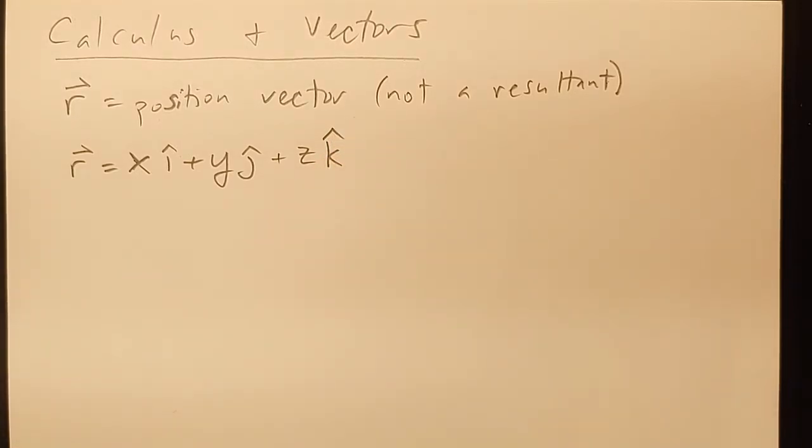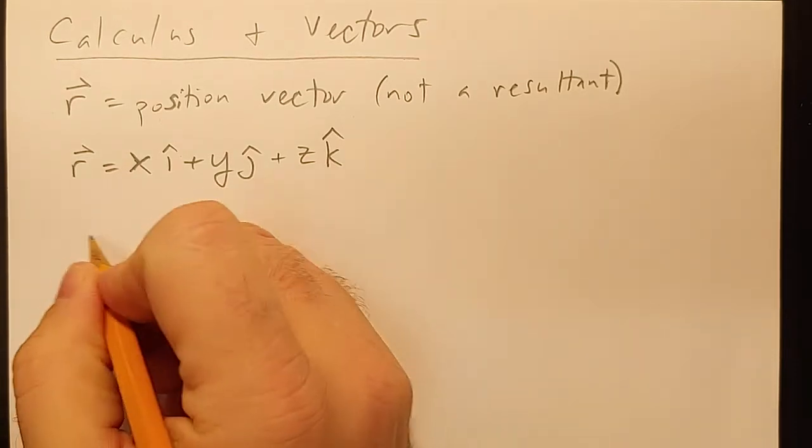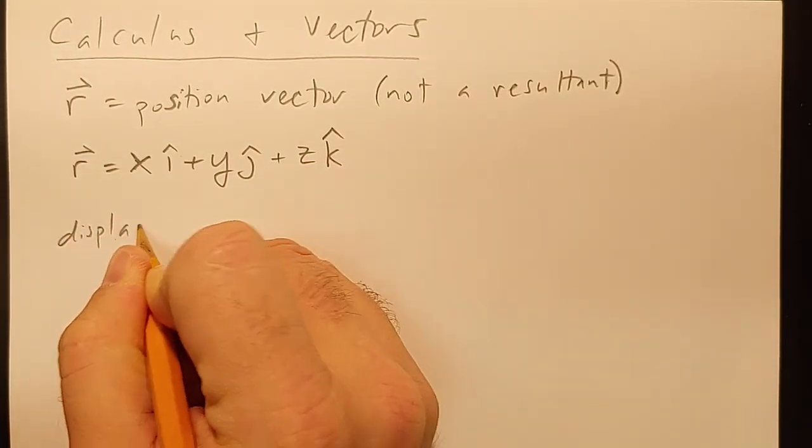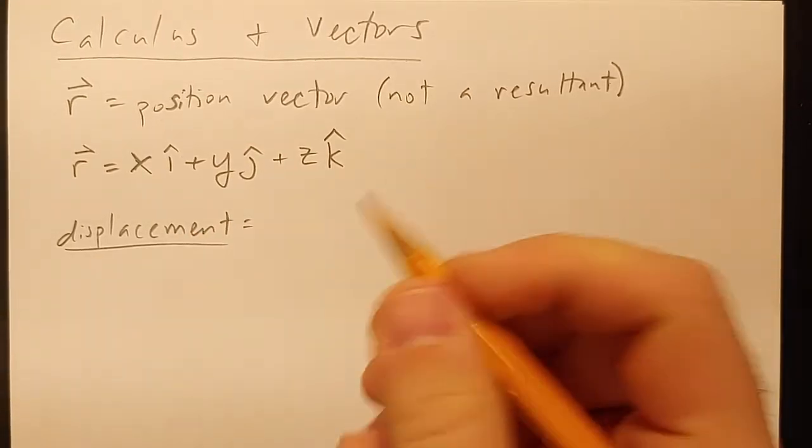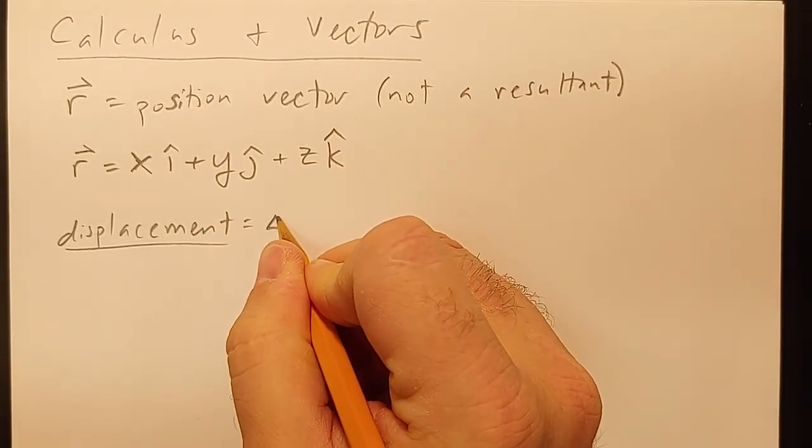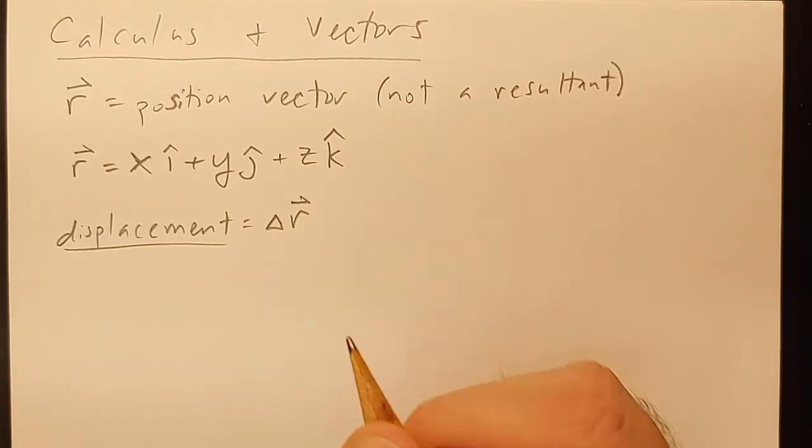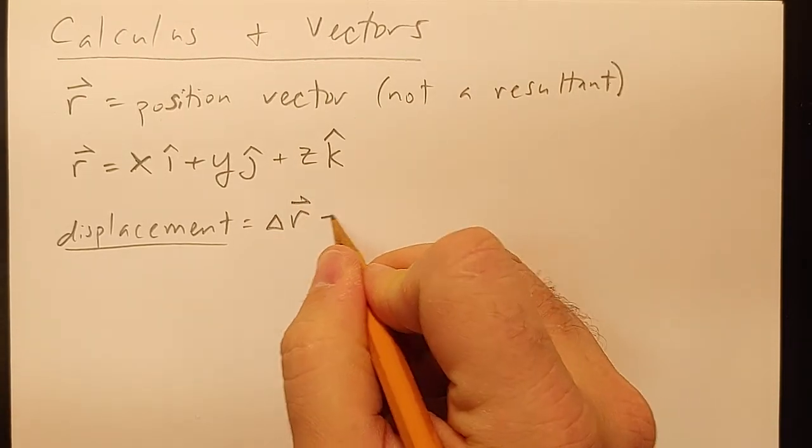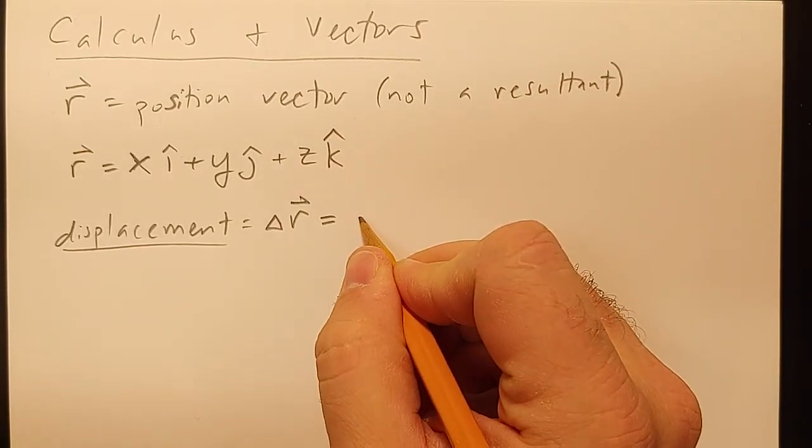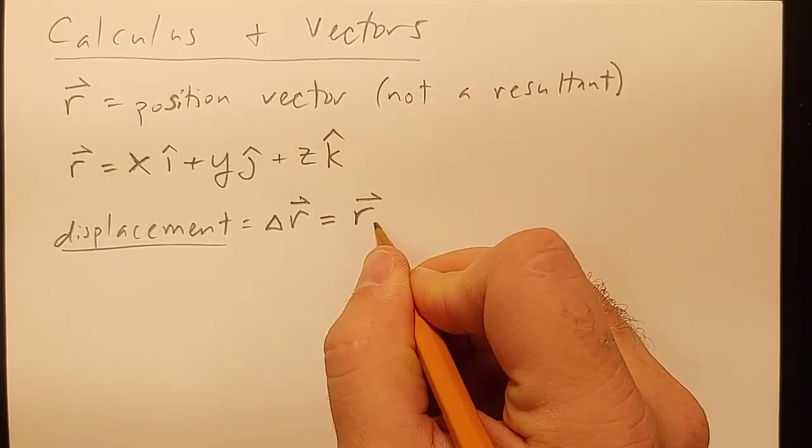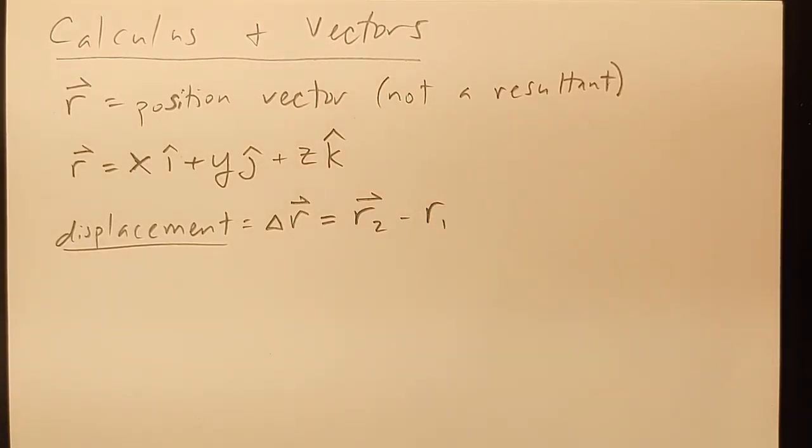From here, everything should be pretty intuitive. It works the same way it did last chapter, we just have to deal with all of these coefficients. You wind up doing the same problem multiple times. For example, displacement is just like it always was. It's the change in position, so it's going to be the change in your position vector. That's going to be your second position minus your first position.